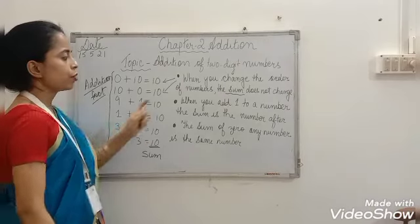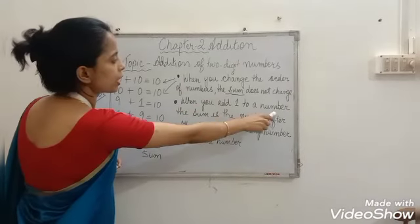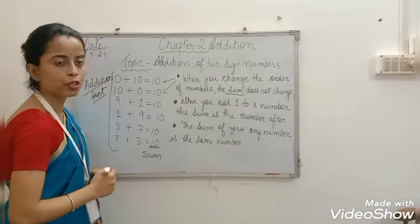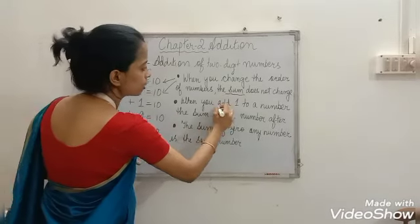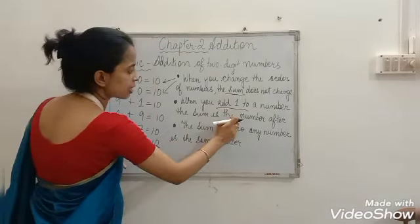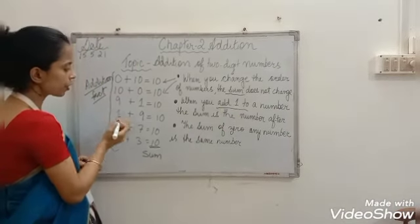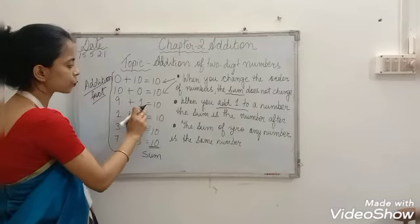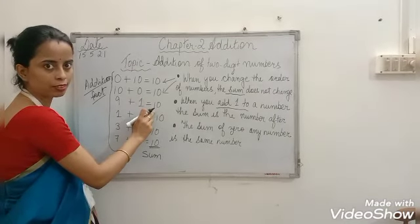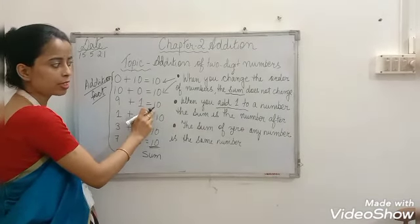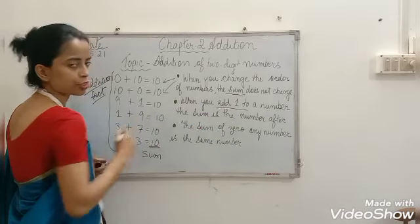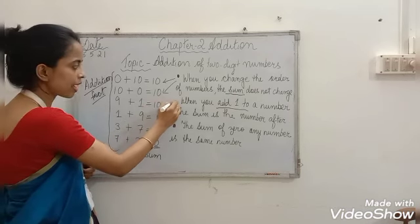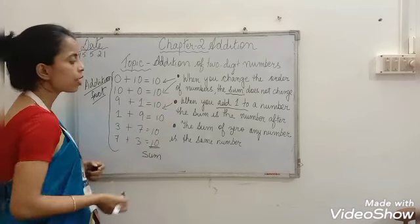Next point: when you add 1 to a number, the sum is the number after. For example, 9 plus 1 equals 10. After 9, the number is 10.